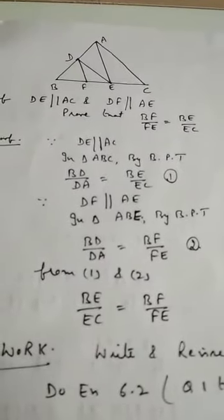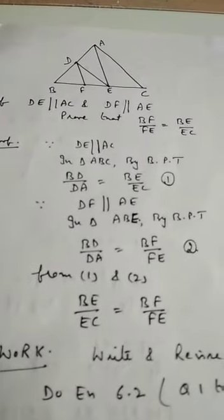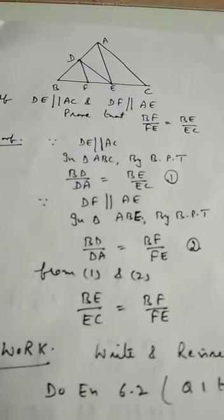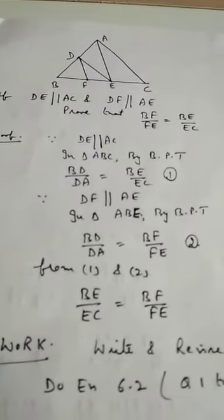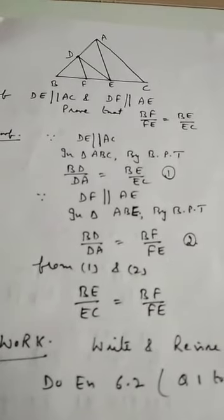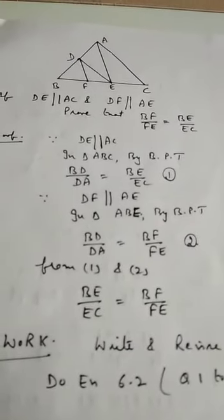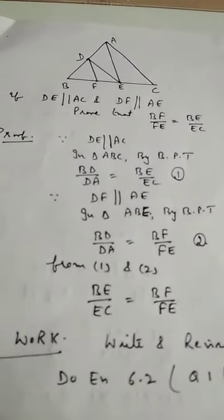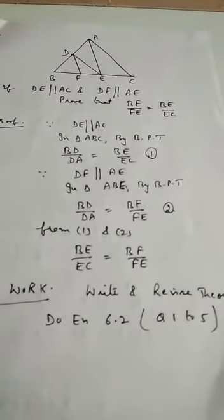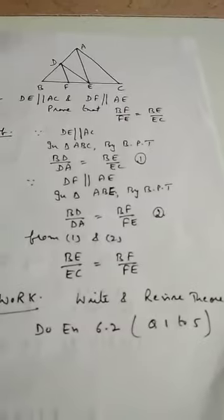Similarly, since DF is parallel to AE, in triangle ABE, by BPT: BD by DA equals BF by FE. This is equation 2. Comparing equations 1 and 2, their left-hand sides are equal, so the right-hand sides must be equal. Therefore, BE by EC equals BF by FE. I hope you are able to apply BPT and its converse. For homework, write and revise the theorem and do questions 1 to 5 of exercise 6.2. Thank you.